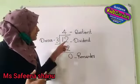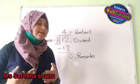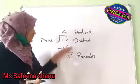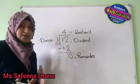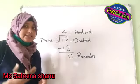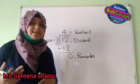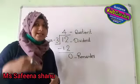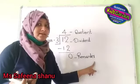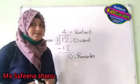The number by which we divide is called the divisor. In 12 divided by 3, 3 is the divisor. The answer we get is called the quotient. Here the quotient is 4. The number left over after dividing is called the remainder.